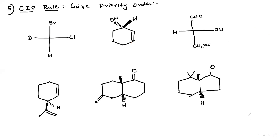The fifth and last question: they give the CIP rule — give the priority order for the chiral carbon. This is chiral carbon with four different groups. I am going to give the priority order. This chiral carbon is attached to bromine, Cl, hydrogen, and deuterium — all are different atoms. Using atomic number: Br is priority 1, Cl is priority 2. Deuterium and hydrogen have the same atomic number, so use mass number — deuterium is priority 3, hydrogen is priority 4. Simple.